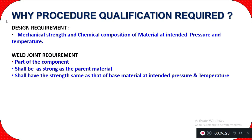Next is the weld joint requirement. The weld joint is a part of the component and shall be as strong as the parent material. The tensile strength of the weld should be equal to or greater than the parent material — not less. The weld shall have the same strength as the base material at the intended pressure and temperature.